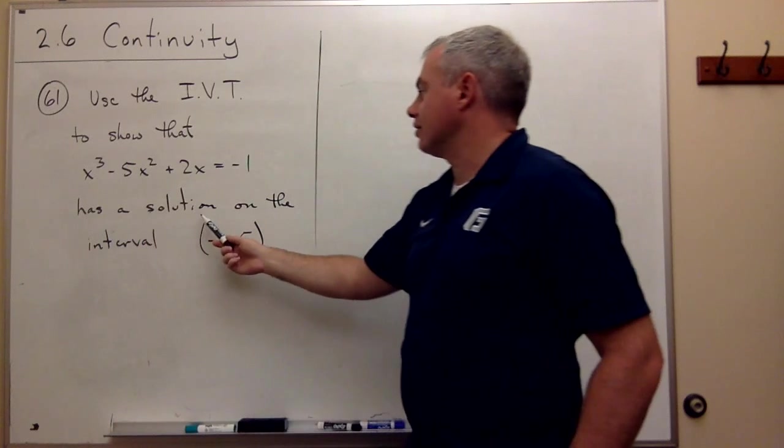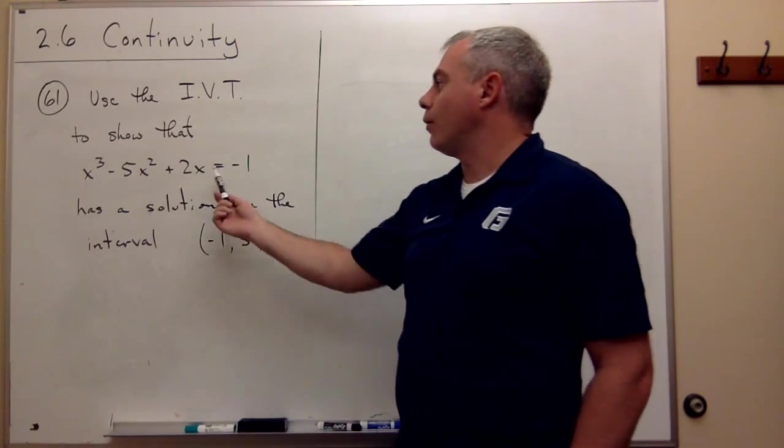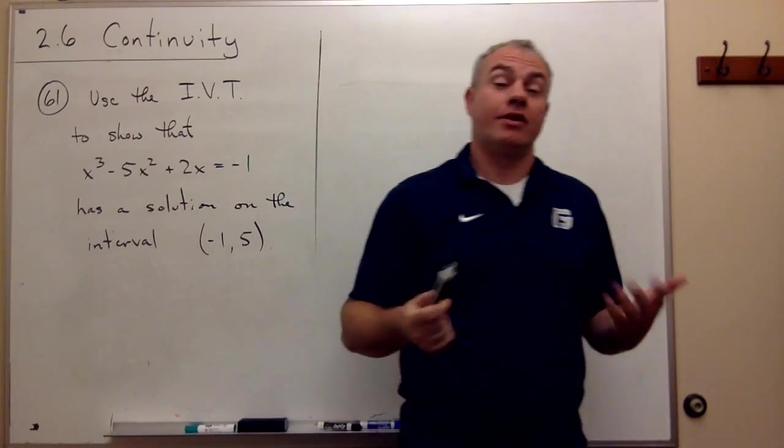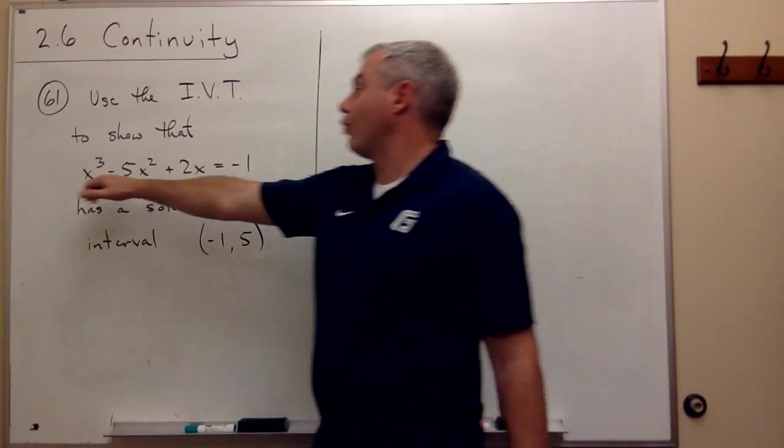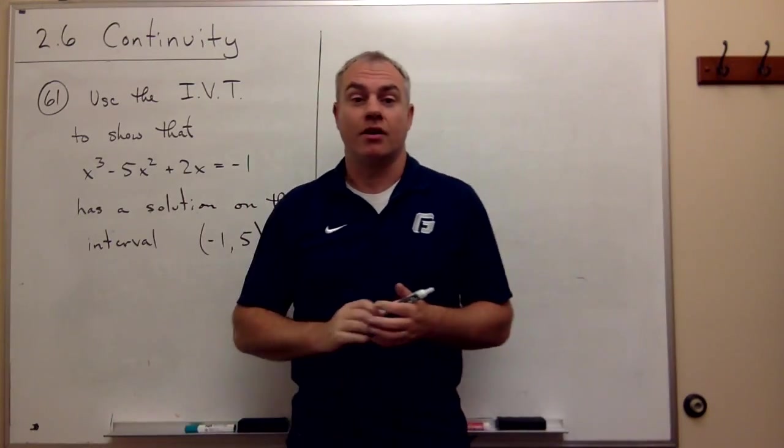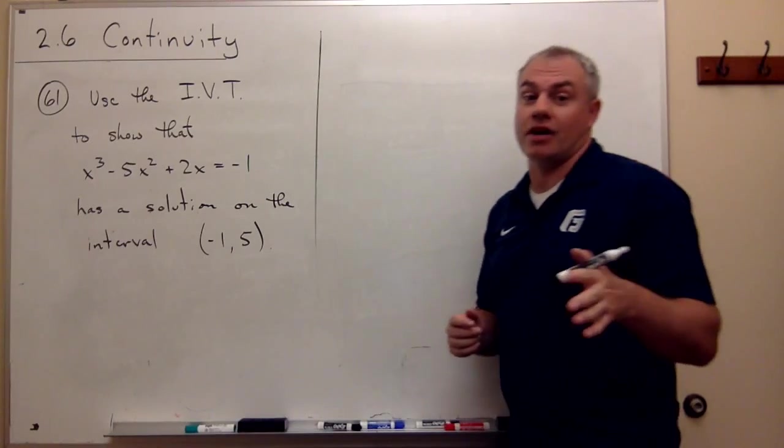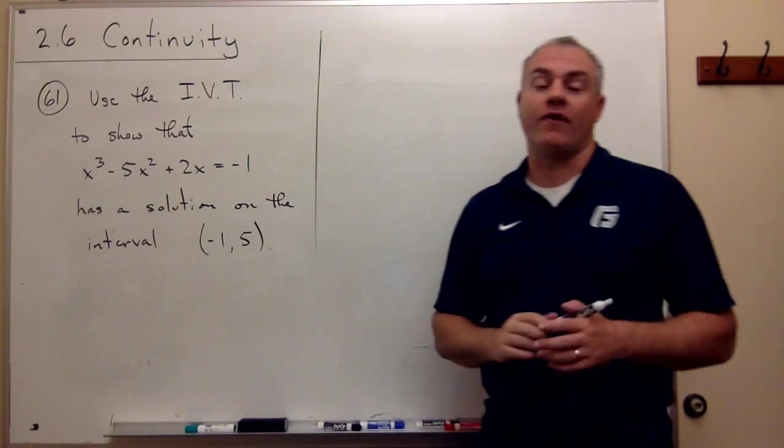has a solution on the interval from negative 1 to 5. What they mean by has a solution is there's an x value that I could plug in for x here, and this would actually be a true statement. And in fact, not only is there an x value, but there's one that lives between negative 1 and 5.